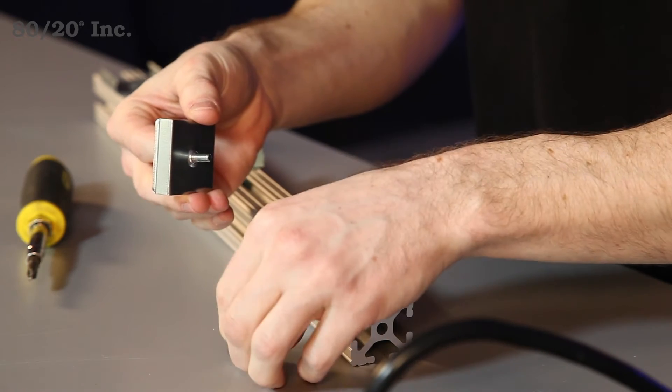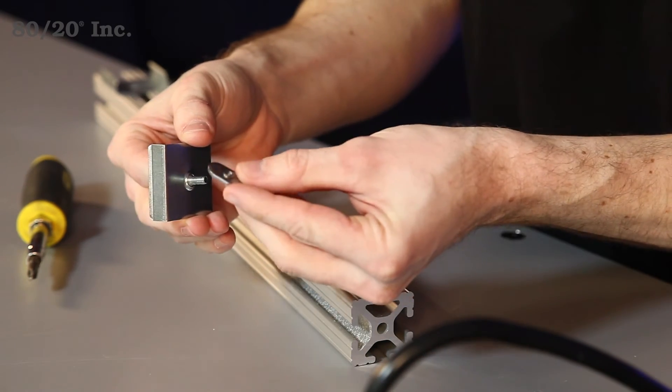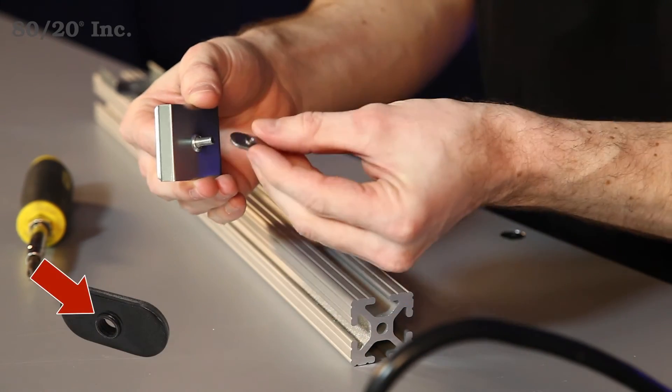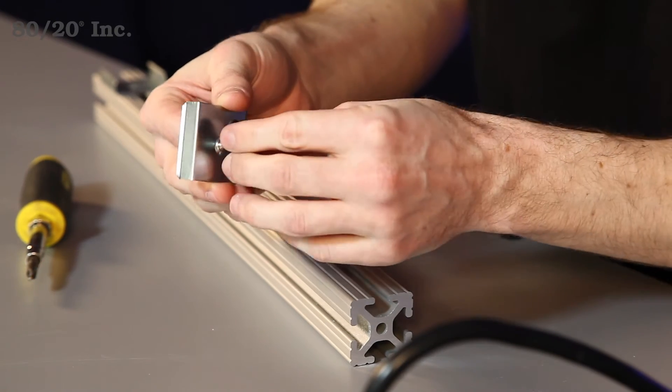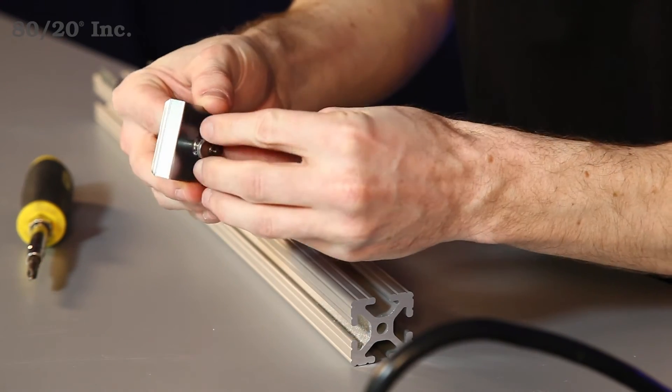We'll put a bolt in it and one last T-nut. Now with the T-nut you want to make sure that the pilot projection is facing away from the bracket when you put it on. We'll just get that on there.